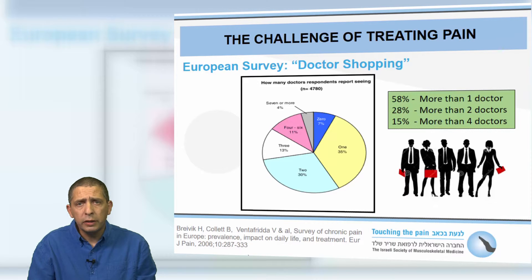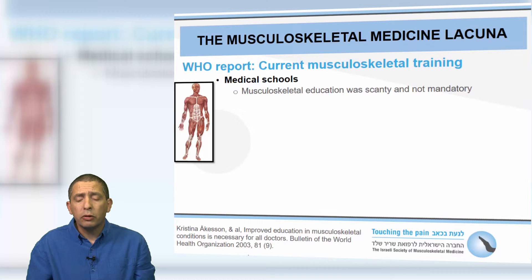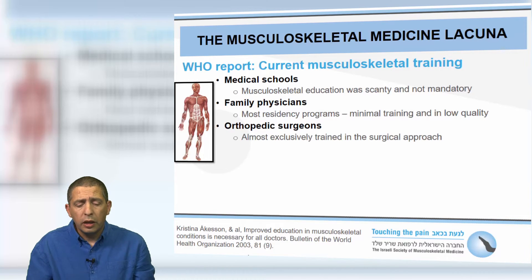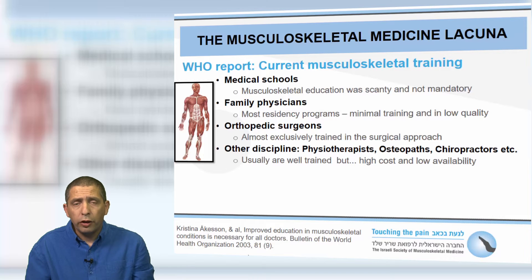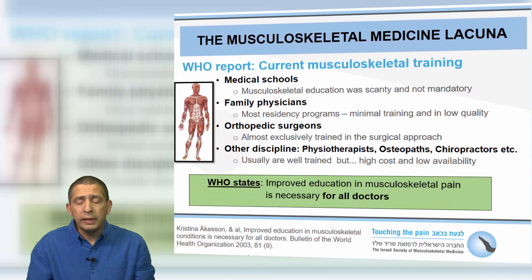Do these numbers indicate that we fail, or is musculoskeletal medicine a lacuna? A WHO report on musculoskeletal training showed that in most medical schools, musculoskeletal education was scanty and not mandatory. Most family medicine residency programs had minimal and low-quality training. Orthopedic surgeons were almost exclusively trained in surgical approaches, even though most musculoskeletal conditions don't need surgery. Other disciplines such as physiotherapists, osteopaths and chiropractors are usually well trained, but are high cost and low availability. The WHO concludes that improved education in musculoskeletal pain is necessary for all doctors.